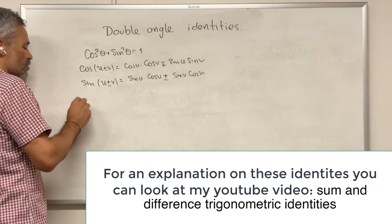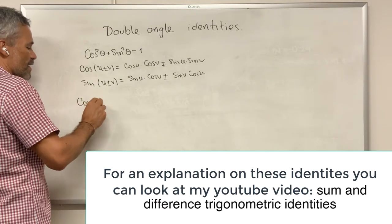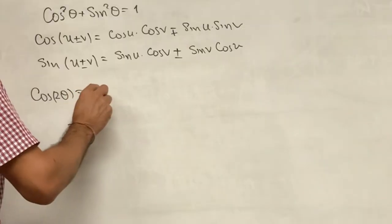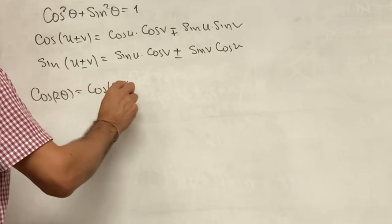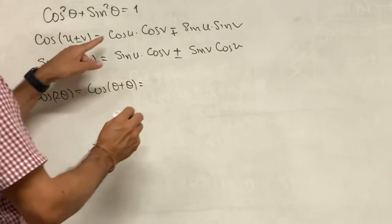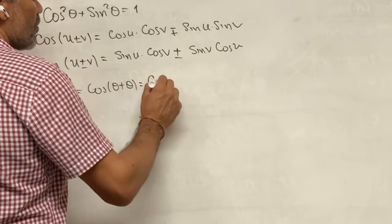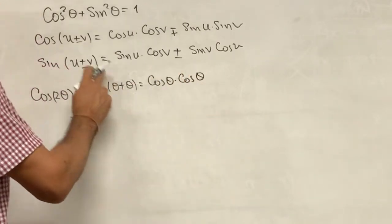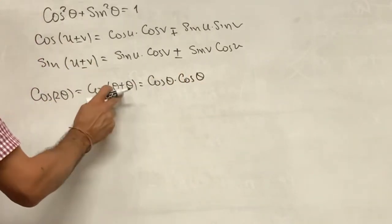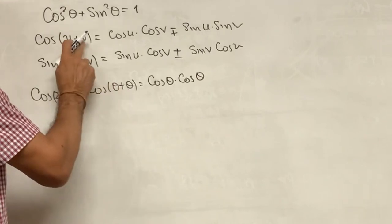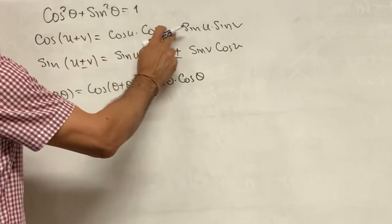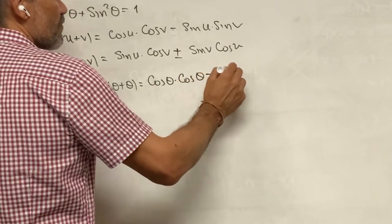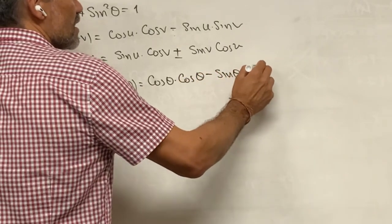From this equation, we have that cosine of 2 theta is the same as cosine of theta plus theta. And therefore, this is equal to cosine of theta times cosine of theta, where we are making u equal v equal theta and using the plus. And then minus sine of theta times sine of theta.